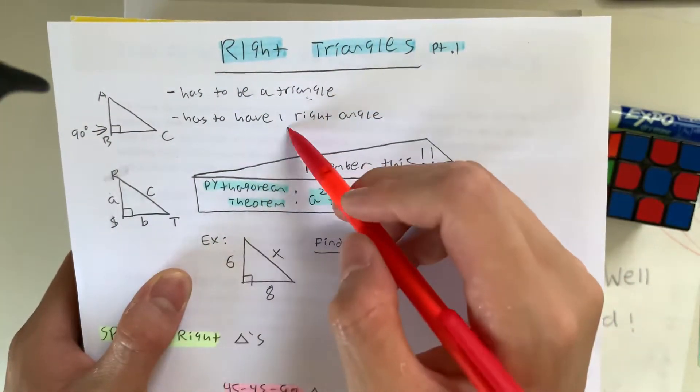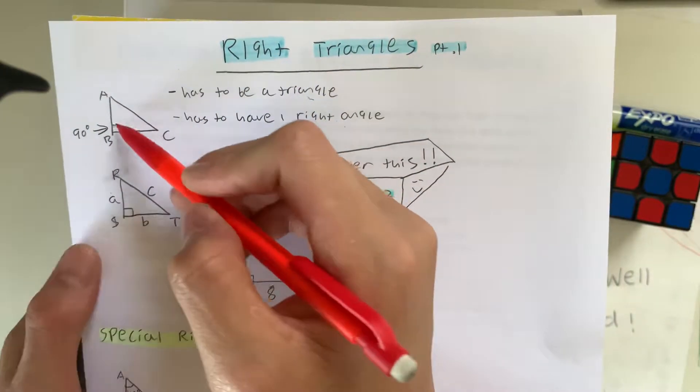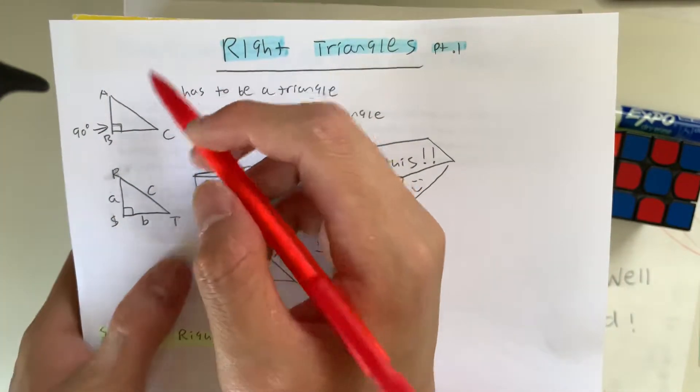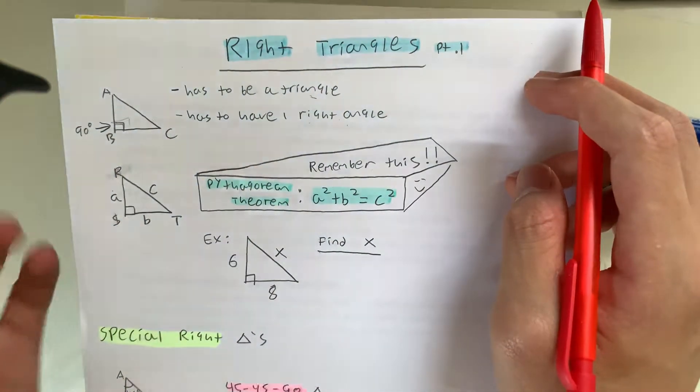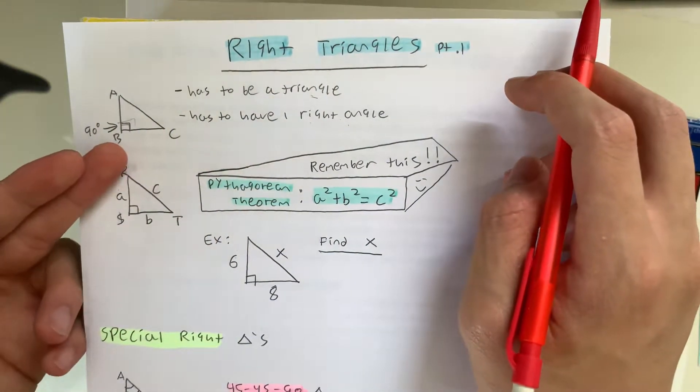And it also has to have one right angle. So it doesn't matter where the right angle is, but the triangle just has to have one right angle. And in triangle ABC, that does have a right angle, so it is a right triangle.